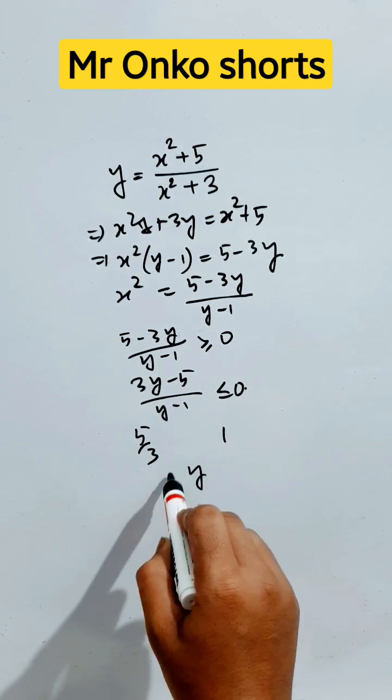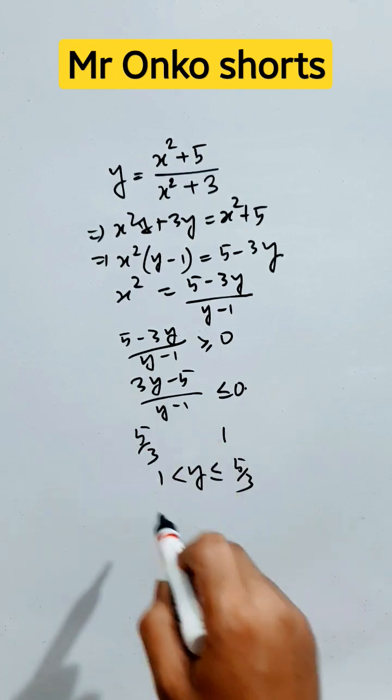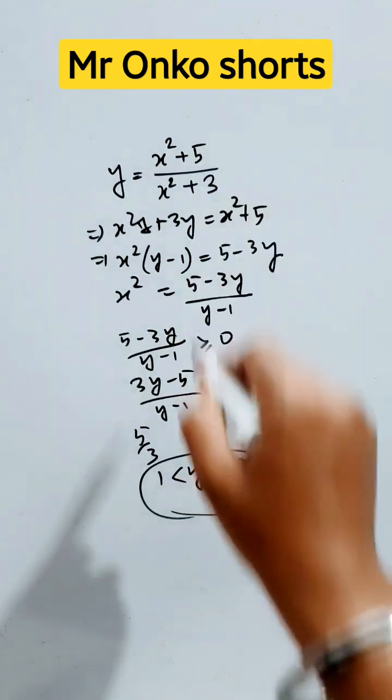Now it will lie between 1 and 5 by 3. The equal to sign will be held here. It is not because this can't be equal to 0. So this is the range of the given function.